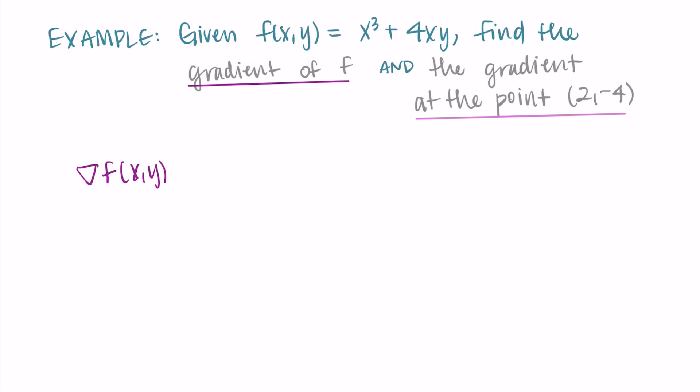The gradient vector has the partial derivative with respect to x in the first position and the partial derivative with respect to y in the second position. I like to find each partial derivative separately and then substitute them in. For the partial derivative with respect to x: x³ becomes 3x², and for 4xy, treating 4 and y as constants, the x term differentiates to 1, leaving just the constant 4y. So the partial derivative with respect to x is 3x² + 4y.